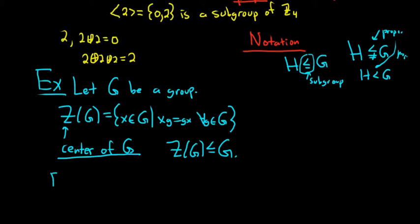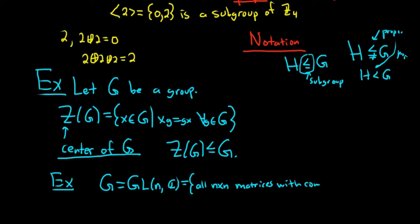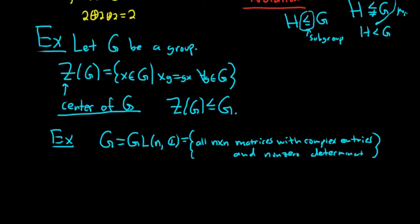Let's look at another example. We'll take G to be the general linear group of order n. So this is the set of all n by n matrices with complex entries, I should have said complex matrices, and non-zero determinant. In other words, they are invertible. So this is called the general linear group. Sometimes it's called the general linear group of order n because of the n.